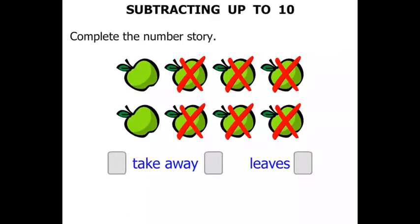Well, the first thing we are going to do is count how many apples we would have. Forget about the crosses for a minute. Let's count the number of apples. 1, 2, 3, 4, 5, 6, 7, 8. So we will write 8 to start with.